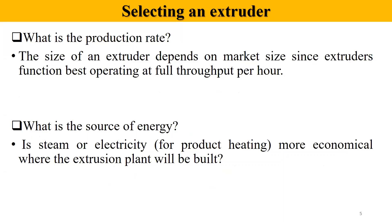The next selection criterion is the production rate. The size of an extruder depends on market size, since extruders function best when operating at full throughput per hour. We should decide and know our production rate in order to fulfill the demand and supply chain in the food market.